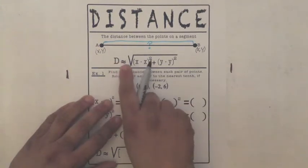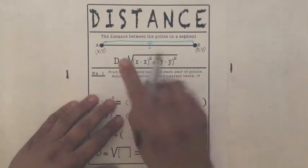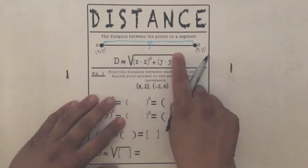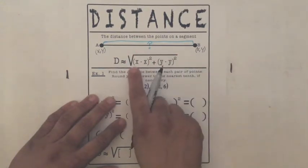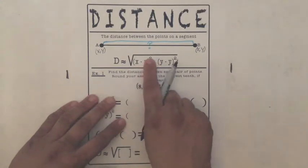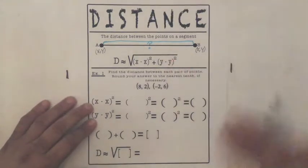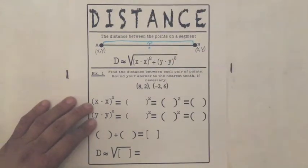So we're going to use this formula here. It says distance is approximately the square root of X minus X squared plus Y minus Y squared. Let's break that up. Let's break it up into small pieces that will make it easier to do.